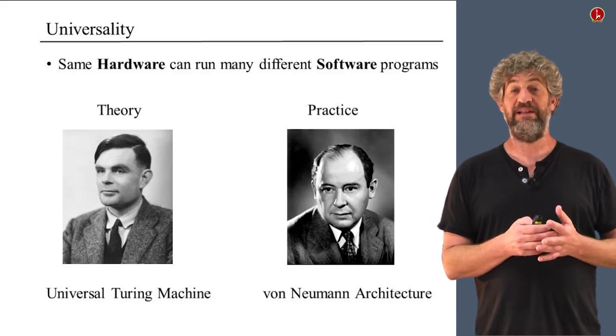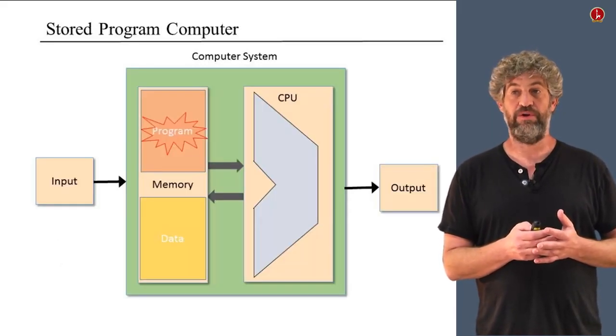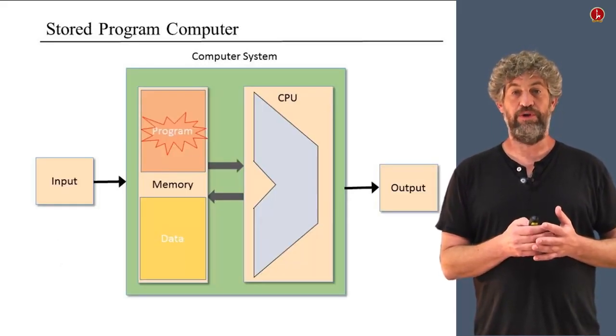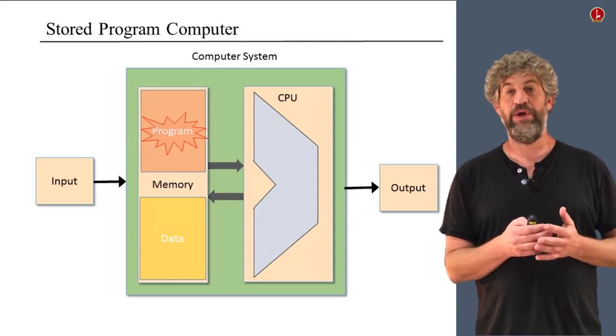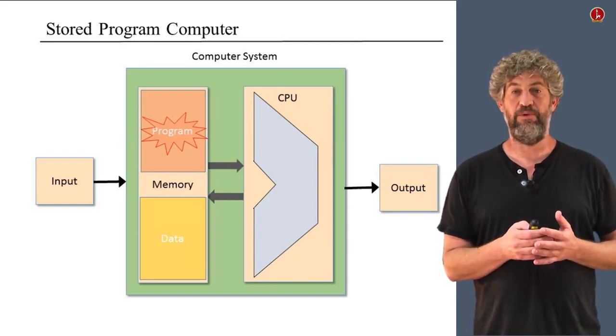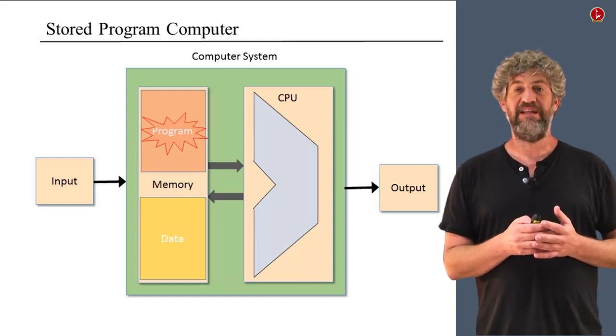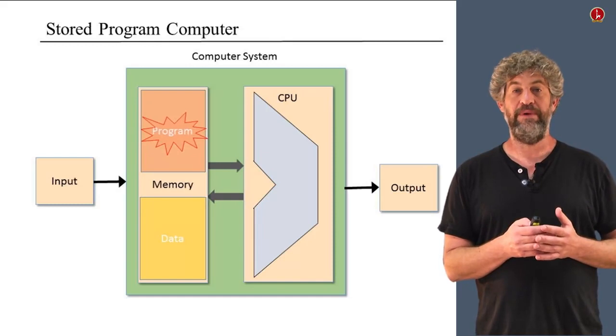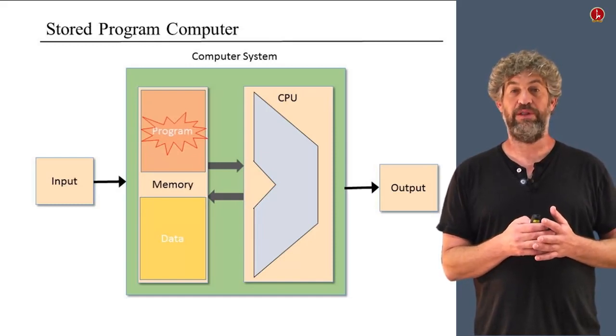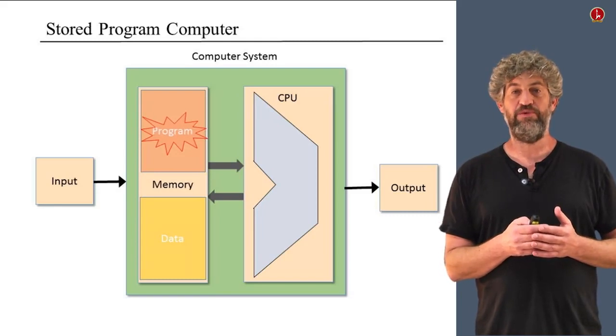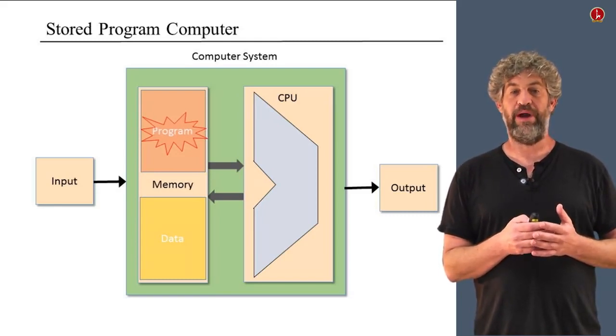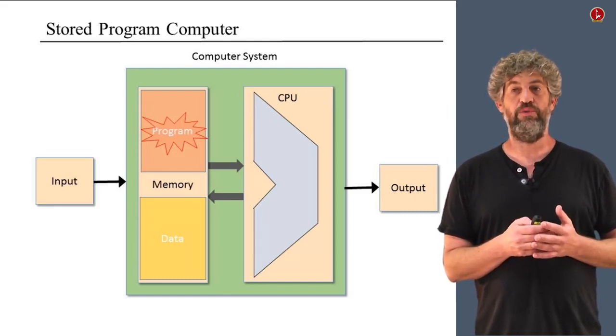So let's look more carefully at how this actually works. We have our computer, and inside the computer we have some central processing unit, some memory, it's going to read some input, produce some output. But inside that memory is going to be a program that tells the computer what to do. While the hardware is fixed, that program, the software, can change. And as the program, the software changes, the computer will do different things.